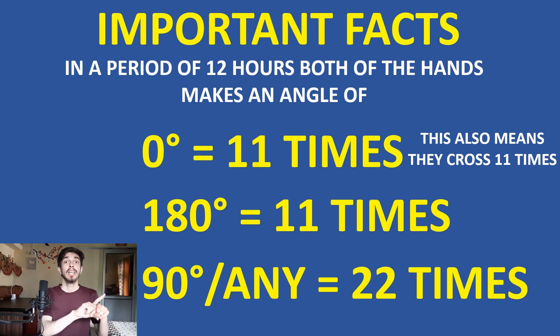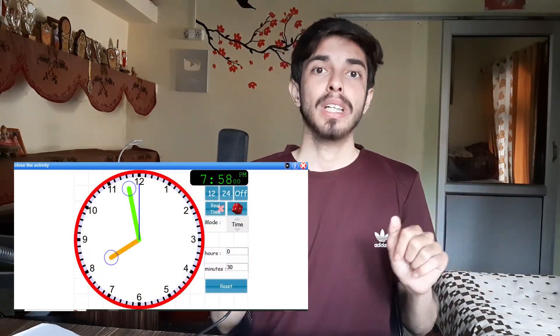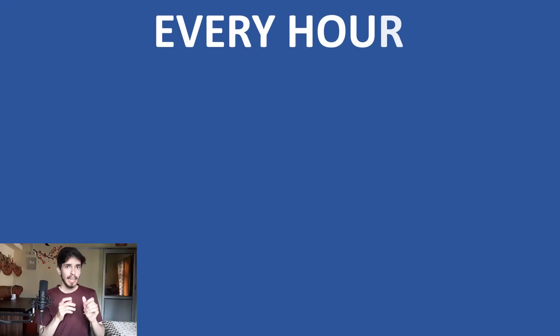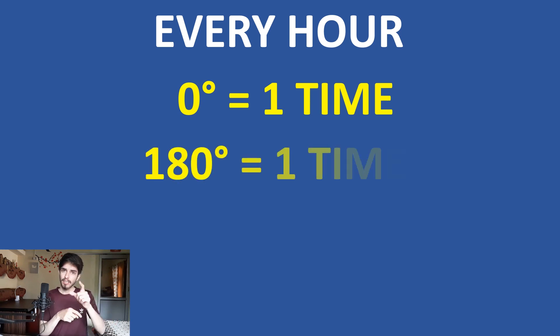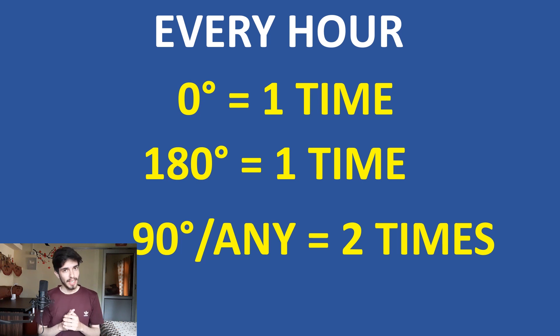For example, how many times do they cross in 24 hours? Just double those amounts. You can also check a clock simulator link in the description — go to that site, move the dials, and see how many times they cross each other to get a visual feel. Every hour, both hands coincide once, make an angle of 180 degrees once, and make an angle of 90 degrees and any other angle twice.